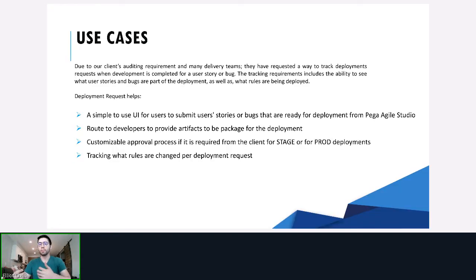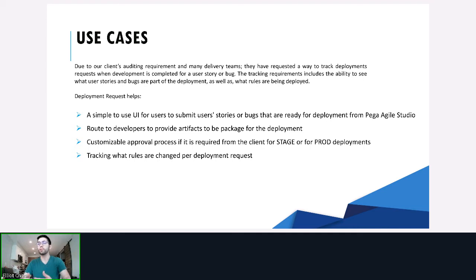Our use case: imagine you have a project developing an application — maybe it's a grant application giving out large sums of money, or your business is under auditing, and part of that auditing requires you to track what changes are going up with each deployment. The Deployment Case Type allows you to select the user stories and bugs that are ready for deployment and then route that to the developers who need to provide the artifacts to package. It offers a simple UI to collect those user stories and bugs and then routes to developers to provide artifacts, having the system package it for you.